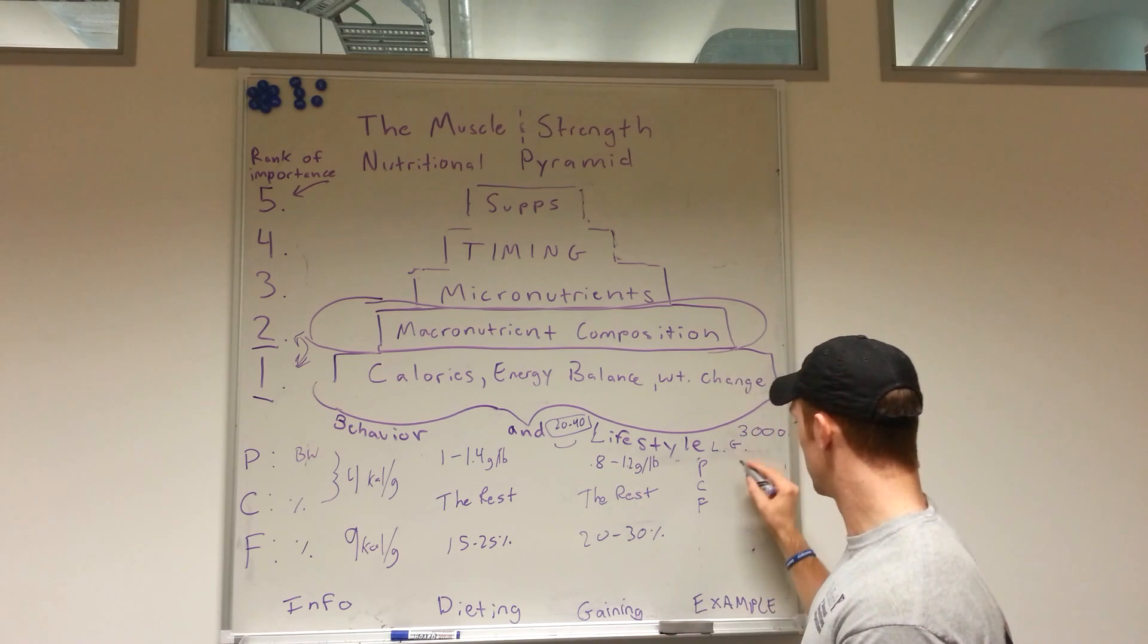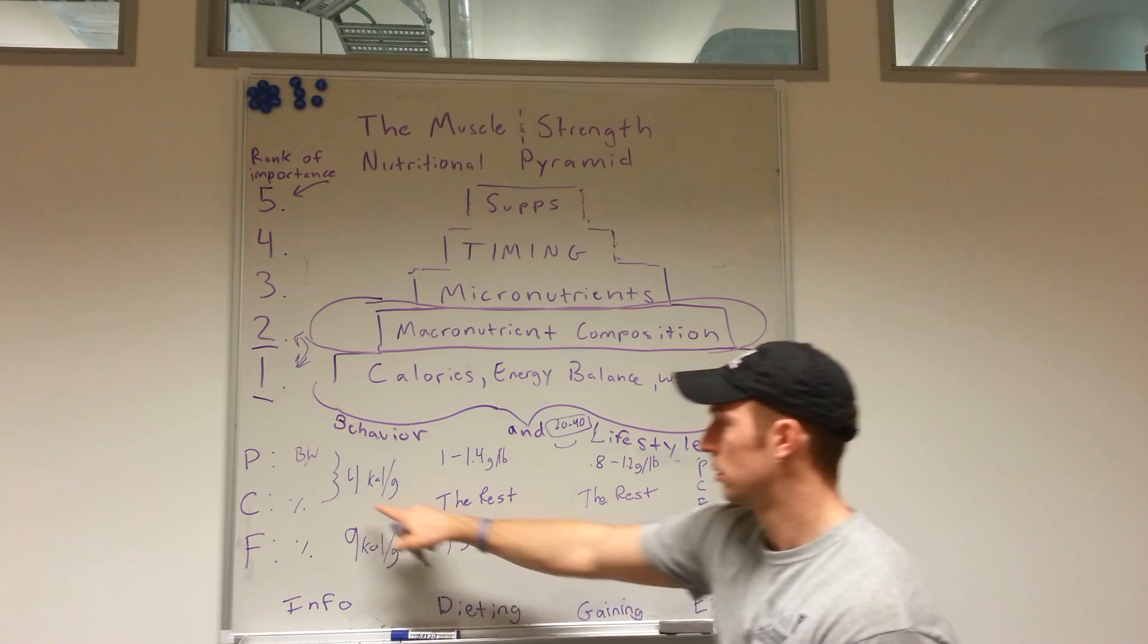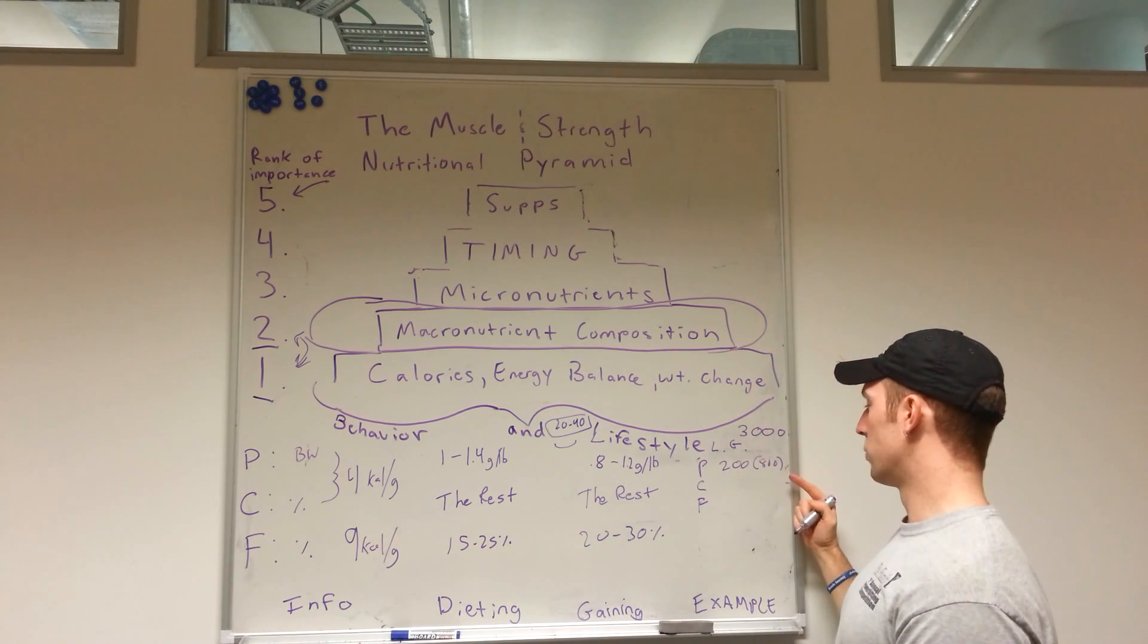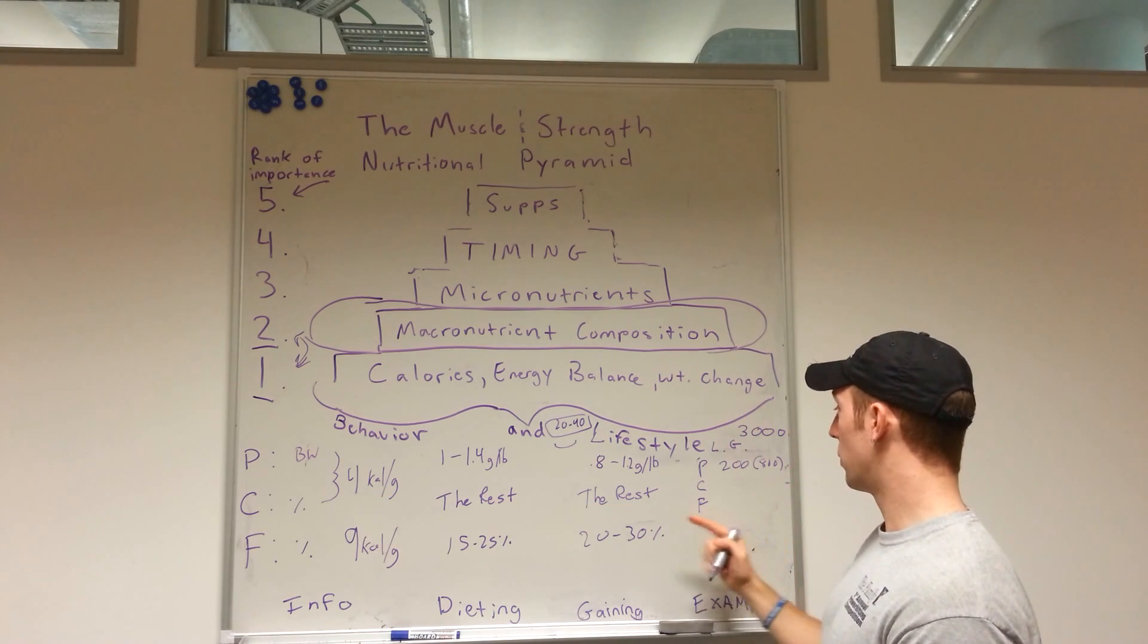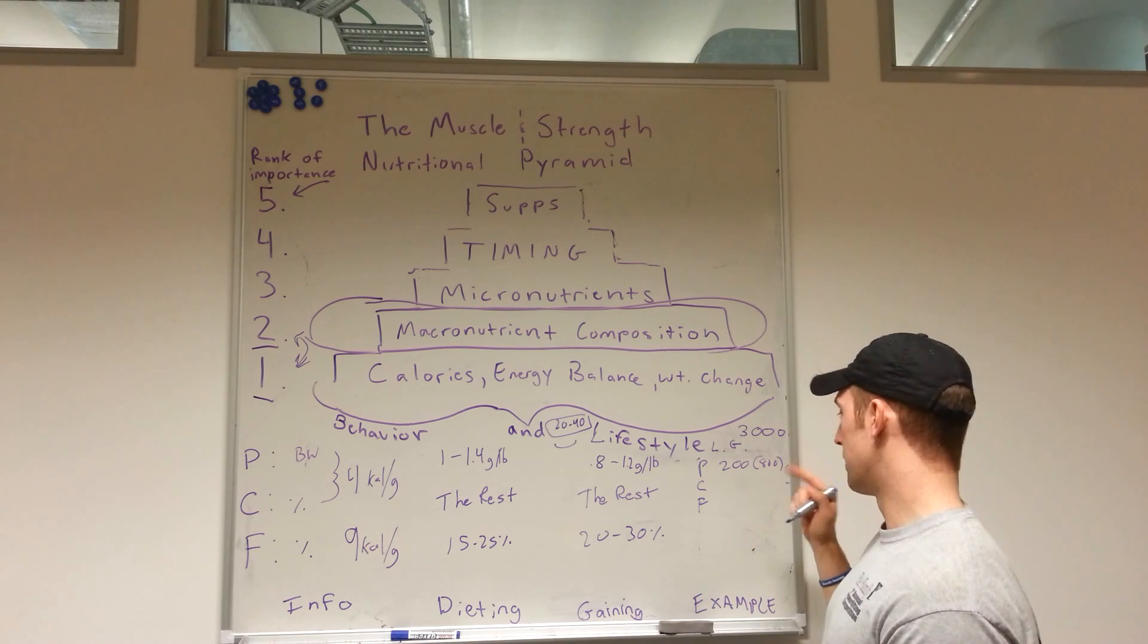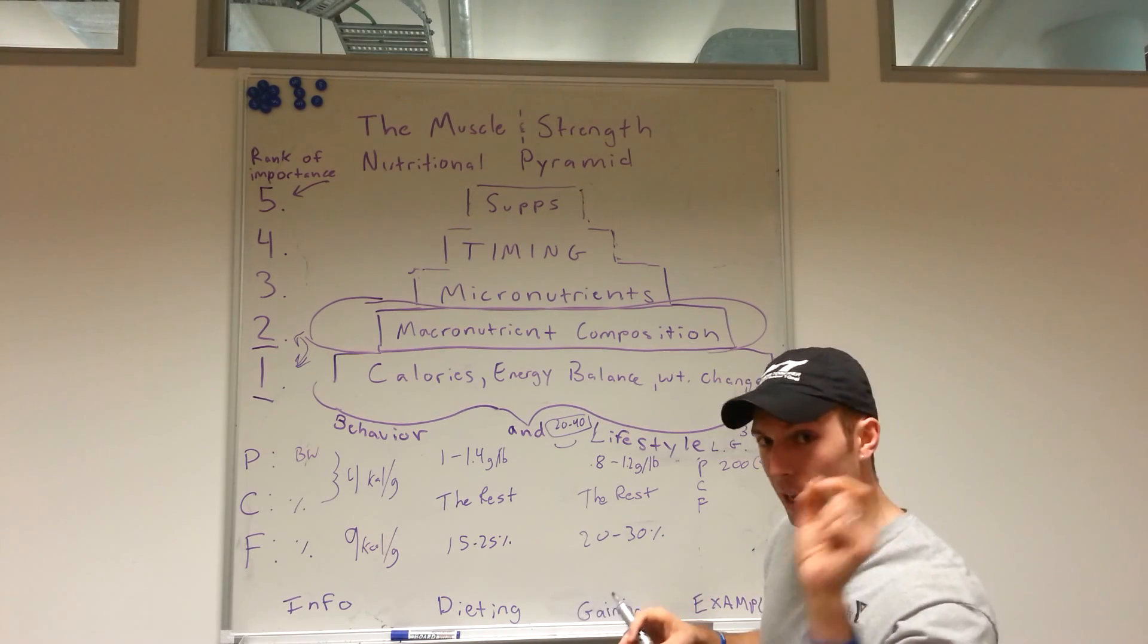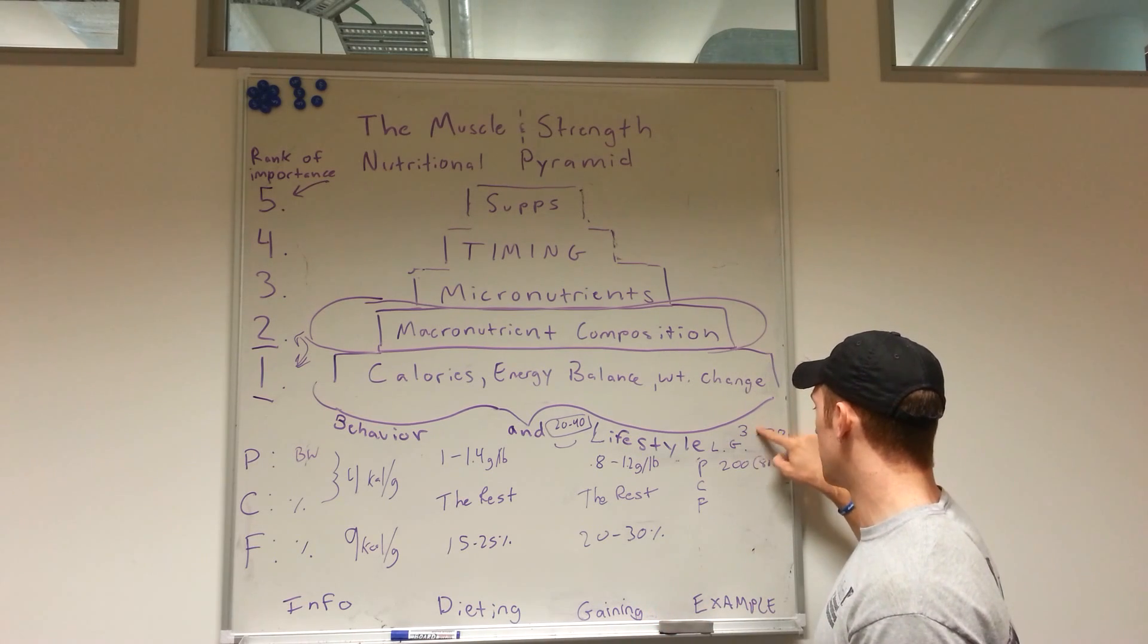Protein, carbs, fat. We'll make it easy, we'll just do his protein at one gram per pound, which is 800 calories. And then we'll set his fat at 25 percent. Actually, let's put him at 3,200 calories because he's lean gaining, so he needs to be in slight surplus.